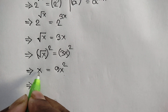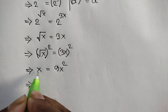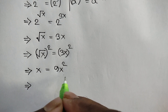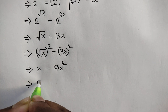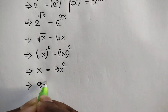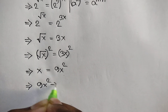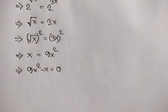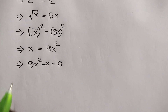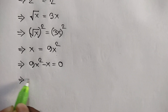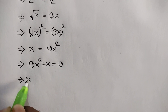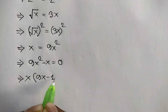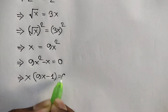Taking x to the right side, we can get 9x squared minus x is equal to 0. Factoring out x, we can write x times 9x minus 1 is equal to 0.